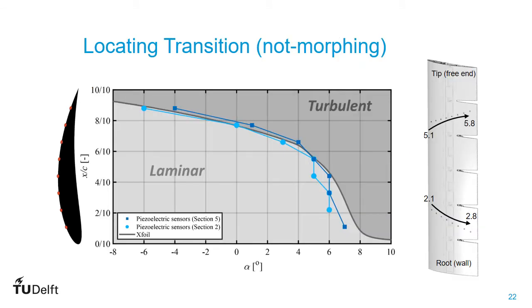Using the flow sensors, we already tried to locate transition on the wing. Here you see a graph giving the location of the transition obtained from X-foil, with the locations of the transition on the vertical axis and the angle of attack alpha on the horizontal axis. We found a very close match between the two rows of eight sensors and also with data obtained from X-foil.